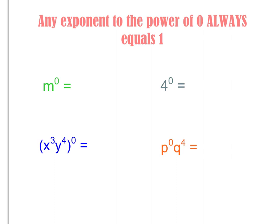So that brings us to our second rule: if you have any base raised to the power of zero, it always equals 1. So if I have m to the power of zero, I get 1. If I have 4 to the power of zero, I get 1. If I take this entire thing inside the parentheses to the power of zero, I'm going to get 1.